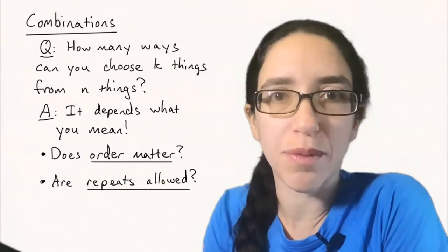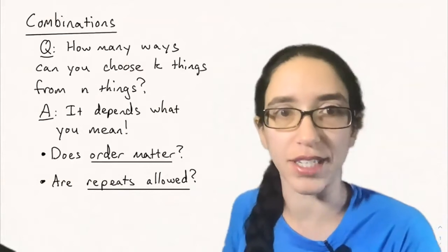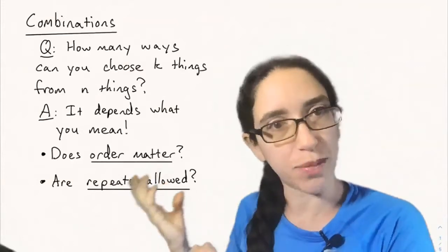So the question is how many ways can you choose k things from n things? We've seen this kind of thing in some contexts before, but remember it depends on what you mean.